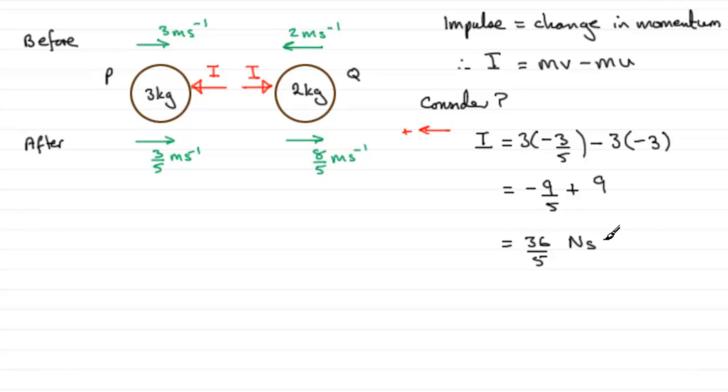So, check that out. Check that you can get exactly the same result if you look at Q. Alright. Make sure you take positive to the right in the direction of I. And then just do the mass times the final velocity minus the mass times the initial velocity. But take care over these signs. And as I say, you should find you get 36 fifths.